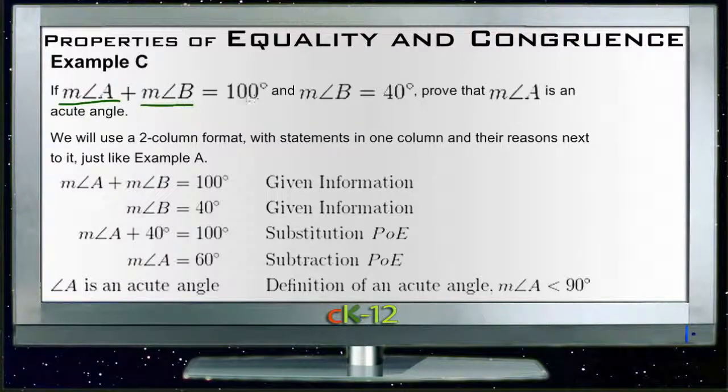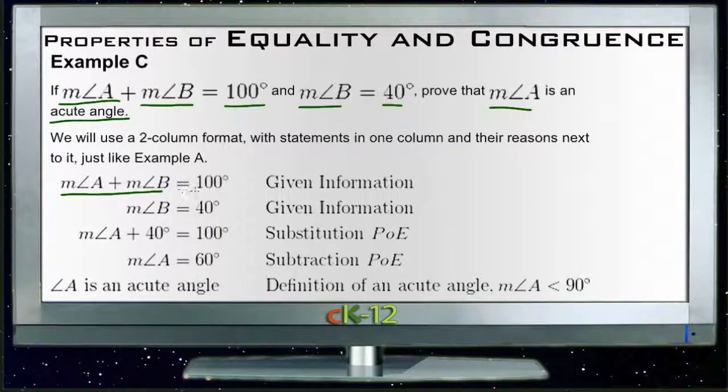But basically it says if the measure of angle A and the measure of angle B together are 100 degrees, and the measure of angle B is 40 degrees, prove that A is an acute angle. Remember, acute angles are anything less than 90. So really we're given this information: A + B = 100, and B = 40. So those are both given.